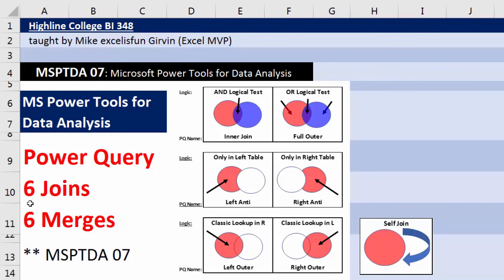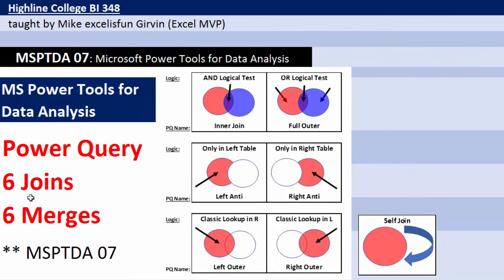We're going to see the six different joins or six different merges we can do in Power Query. We can do an inner join, full outer, left anti, right anti, left outer, right outer, and even a self-join.